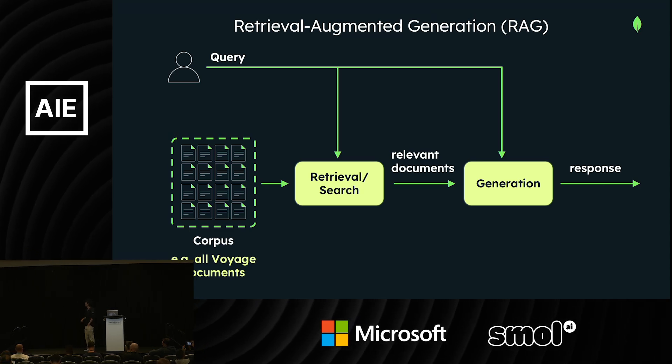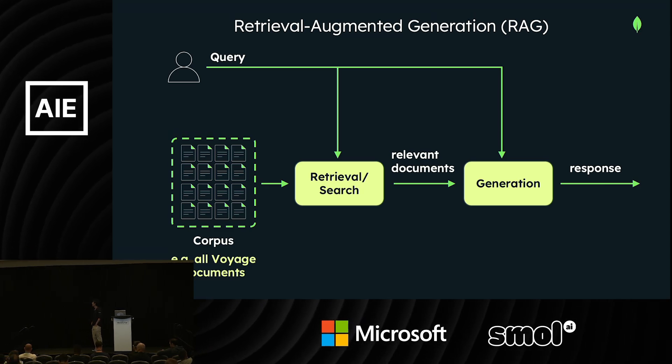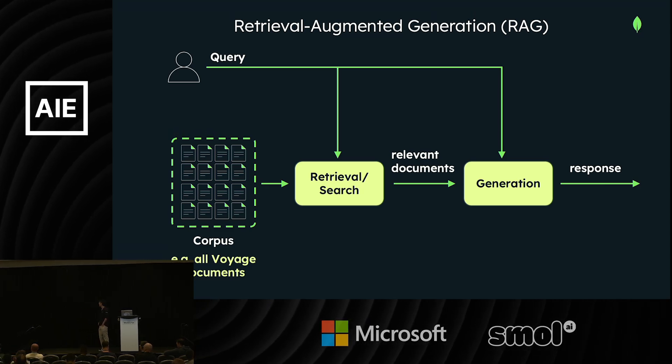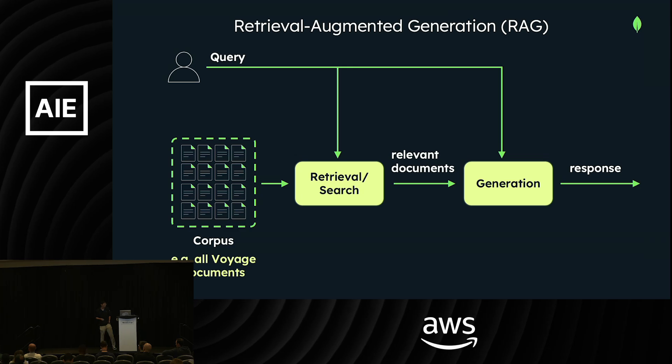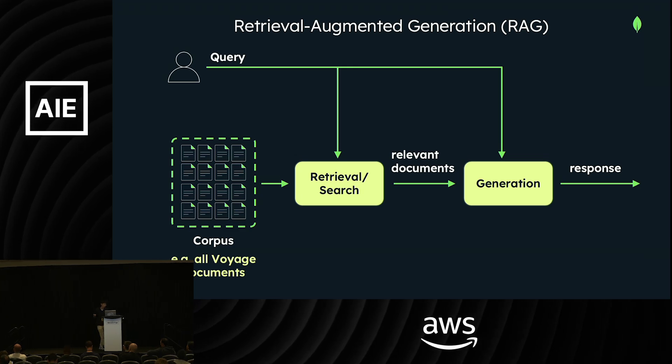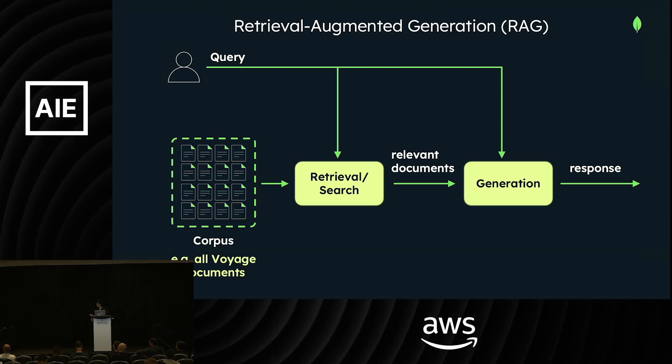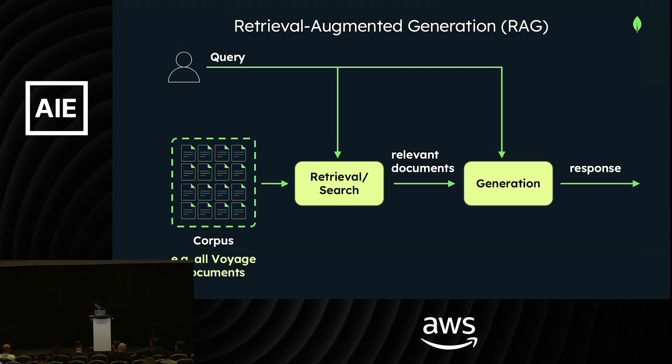There are a few options to enable us to ingest that data: RAG, fine-tuning, and long context — which are all ways to ingest data. We'll focus on RAG for the rest of the talk.